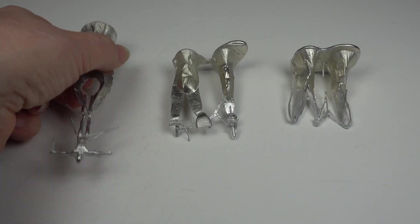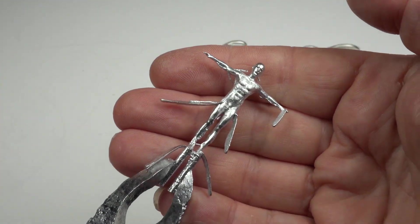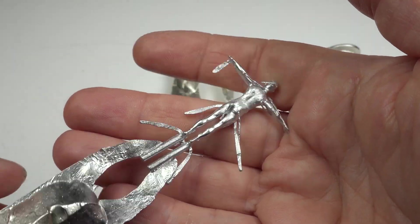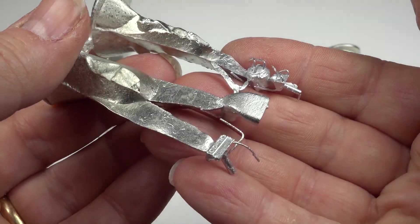And here are our castings with the feeds and air vents still attached. These can be cut off with the tin snips. The surface finish is quite good and these parts shouldn't take long to clean up.